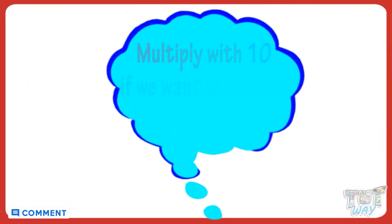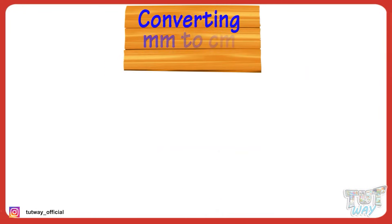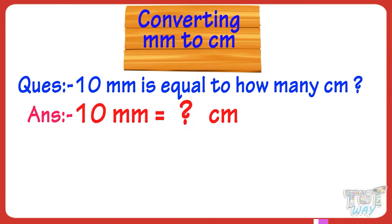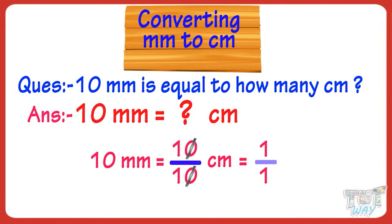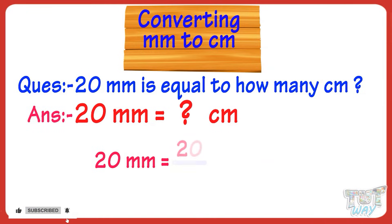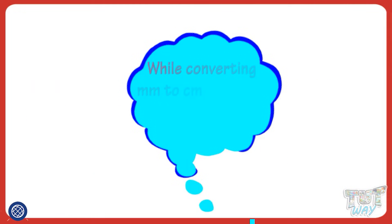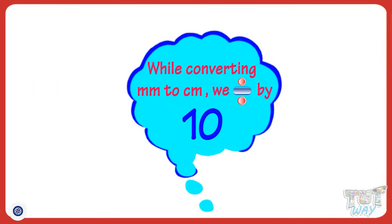So we multiply by 10 to convert centimeters to millimeters. Now let's learn converting millimeters to centimeters. 10 millimeters equals 10 divided by 10 centimeters — 10 divided by 10 gives 1, so 10 millimeters equals 1 centimeter. 20 millimeters is equal to how many centimeters? 20 divided by 10 equals 2, so 20 millimeters equals 2 centimeters. So kids, when we convert millimeters back to centimeters, we divide by 10.